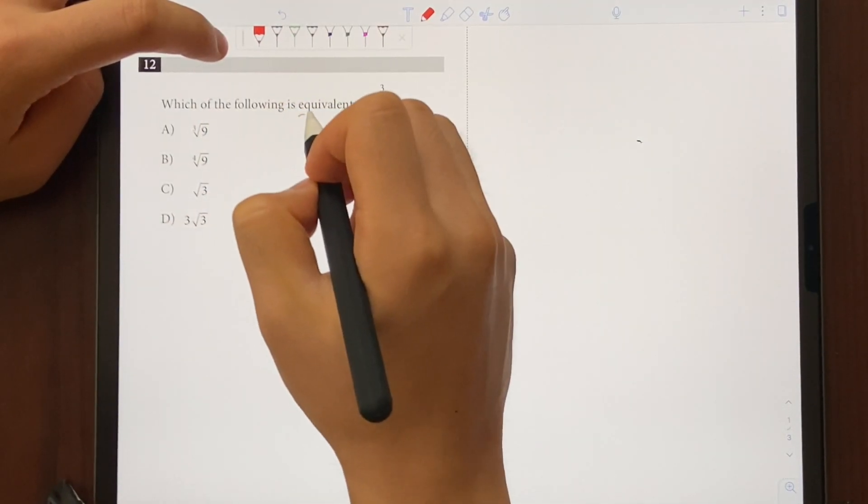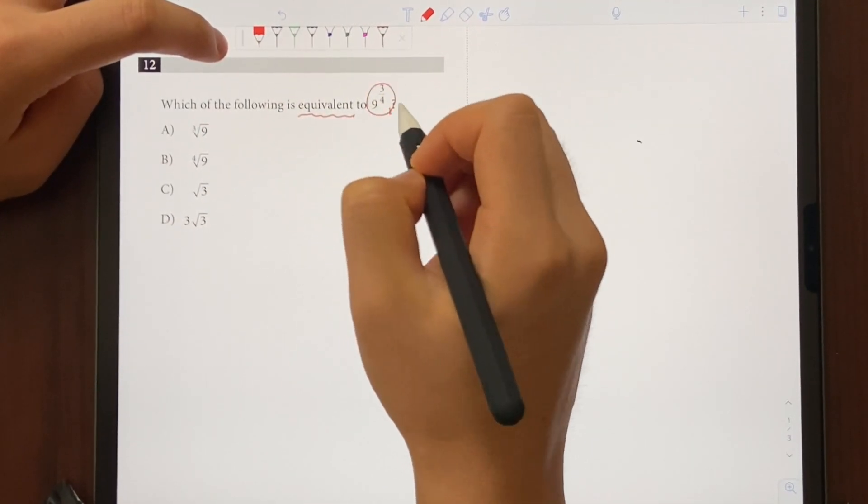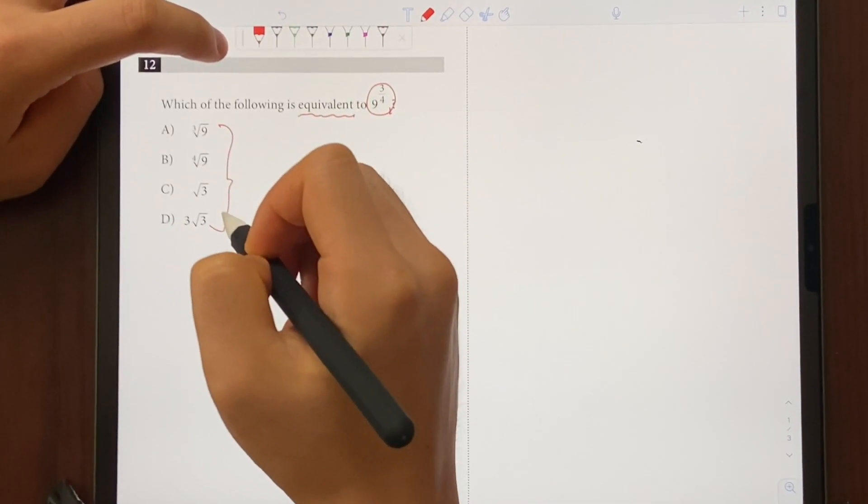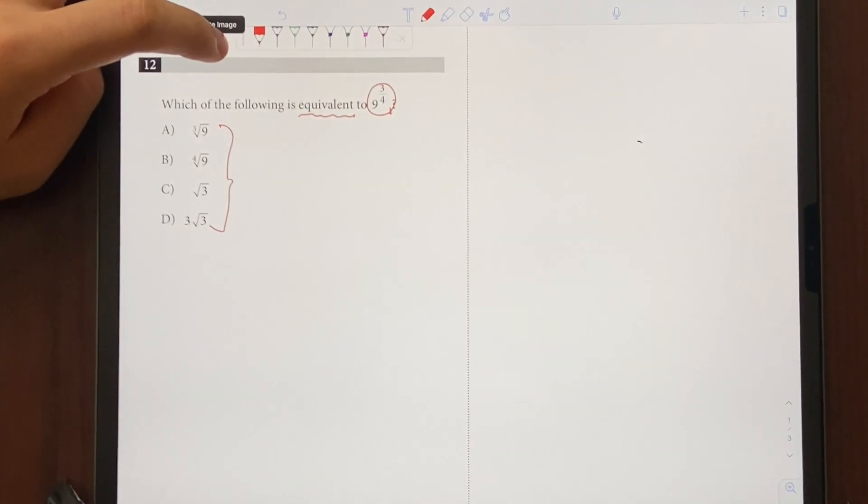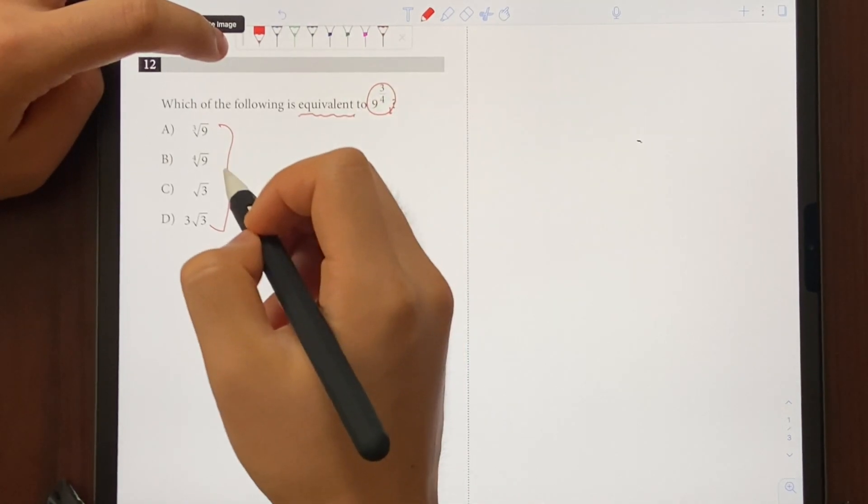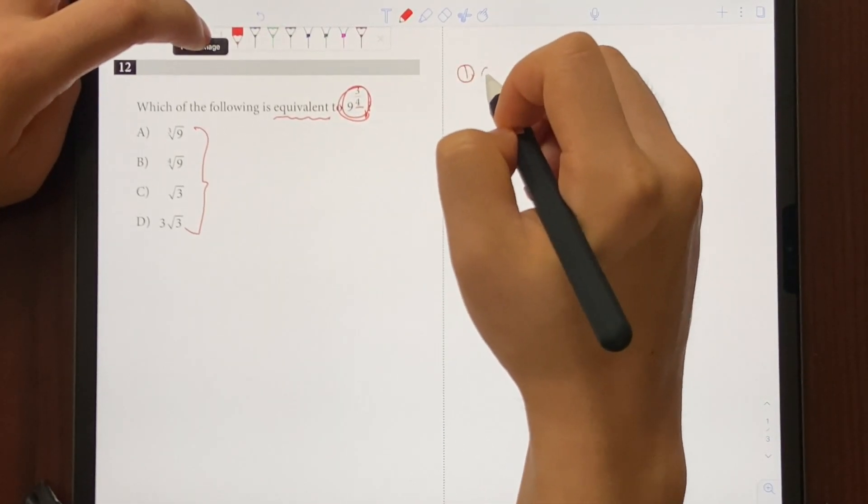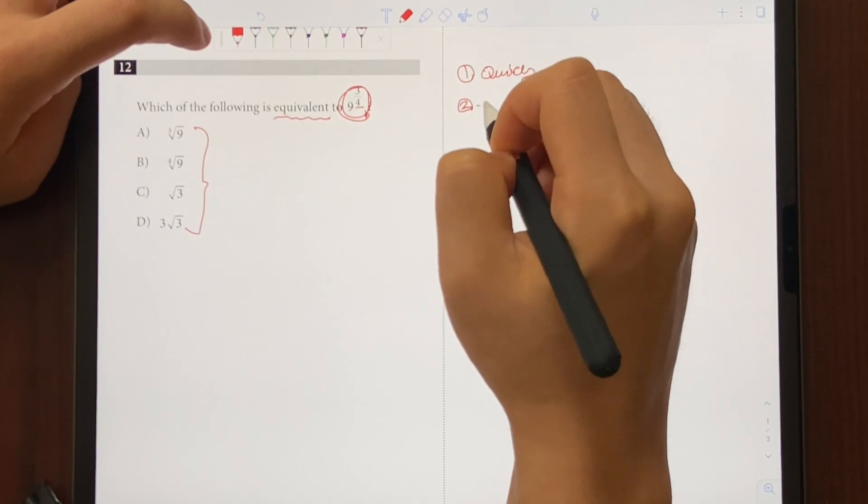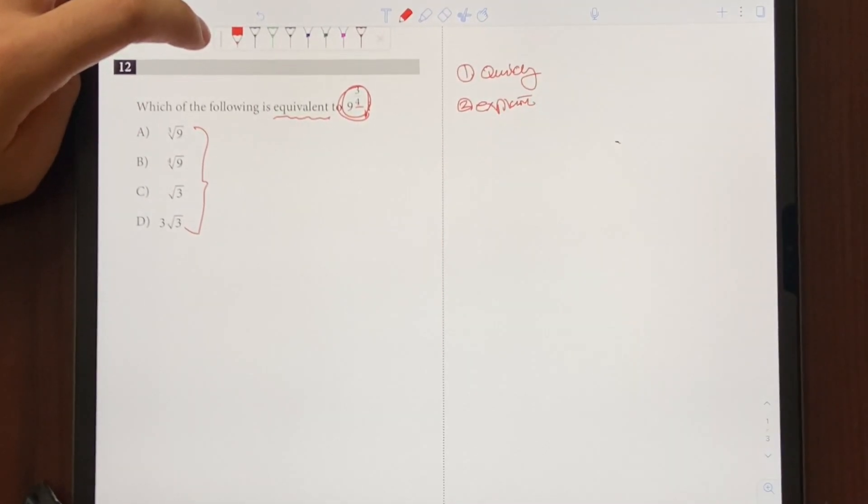So the question says, which of the following is equivalent to 9 to the 3 fourths? And if you look at the answer choices, they all have radicals in it. So that probably means the question wants exponents changed back to radicals. So first, I'm going to show you how you can quickly solve this question.